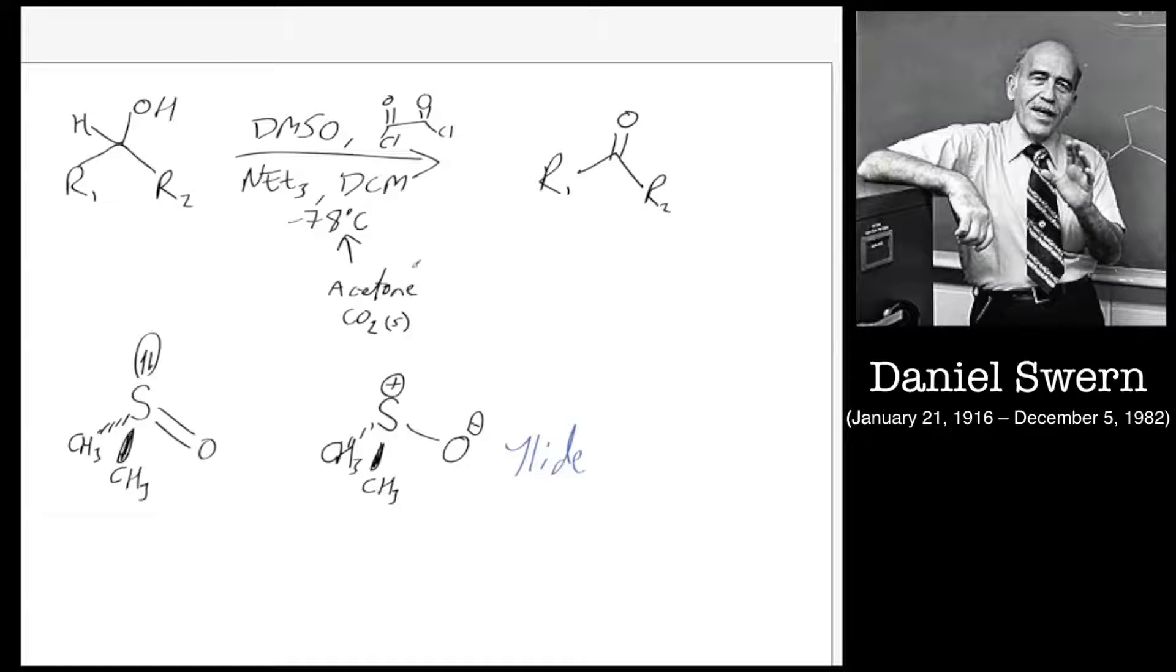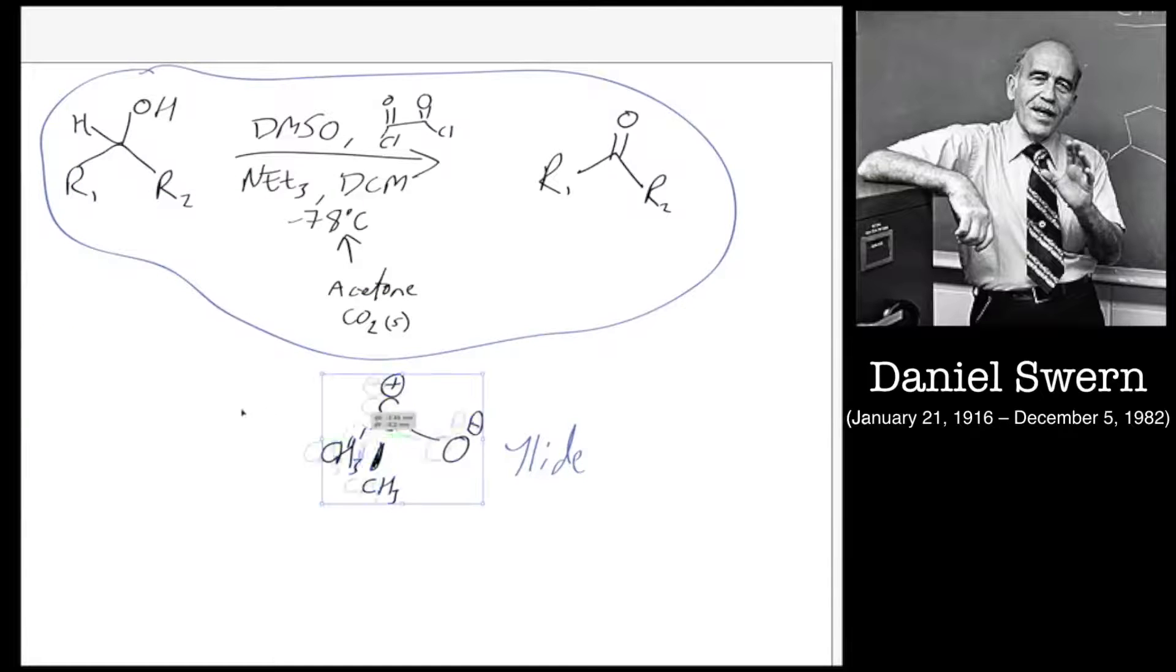We need to now understand this reaction, the Swern oxidation mechanism. How does DMSO help to make the ketone? We're going to try and do the mechanism for that now using DMSO. This is DMSO, I'm going to write it as CH3, sometimes I write it as Me for methyl. This is oxalyl chloride, it's quite a reactive species.